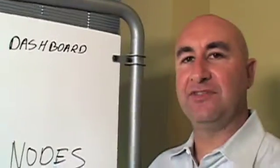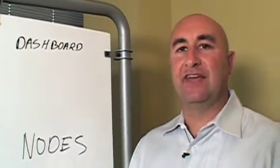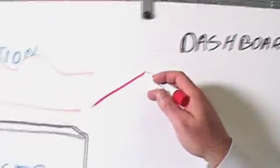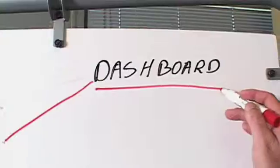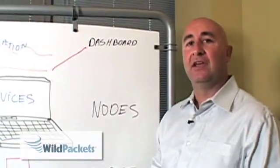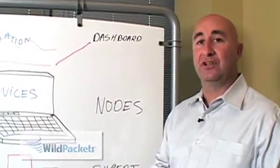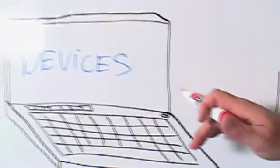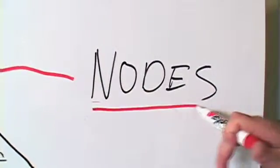Within those symptoms, we have four ways of visualizing that data. One way within our products is the dashboard view. The dashboard will allow you to see the utilization over a particular time. For devices, we have a particular view that's called nodes.